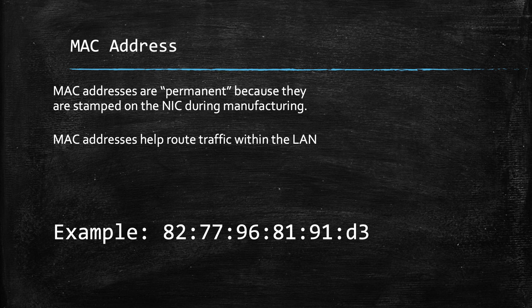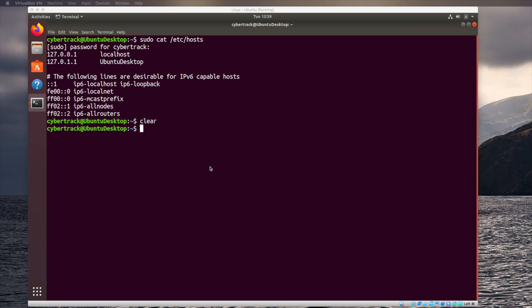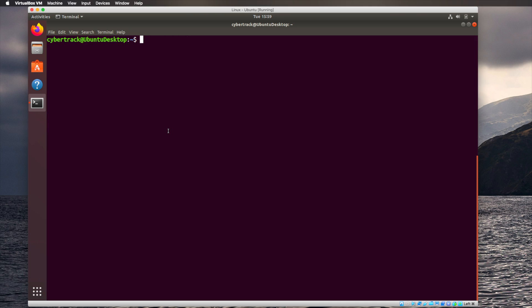MAC addresses are theoretically permanent because they are stamped onto the network interface card. The first three bytes are reserved for the manufacturer — you can Google those first three bytes to find out if it's an Intel card, an Apple device, or a Cisco device. The last three bytes are theoretically unique and serve as a unique identifier for that specific network interface card.